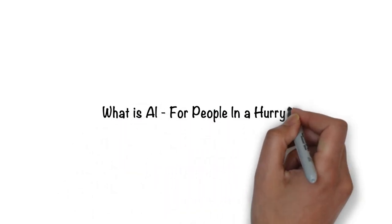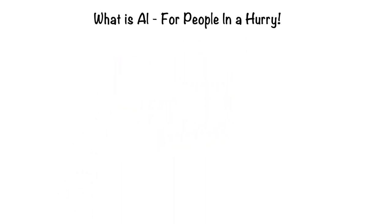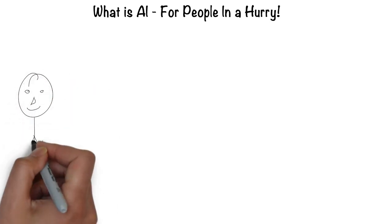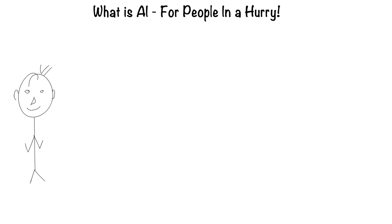Artificial intelligence for people in a hurry. The easiest way to think about artificial intelligence is in the context of a human. After all, humans are the most intelligent creatures we know of.